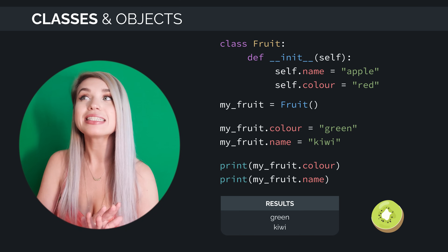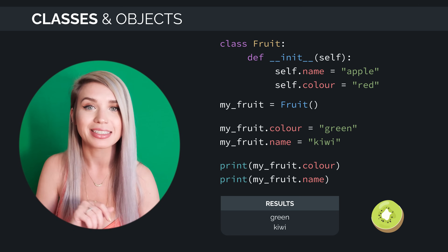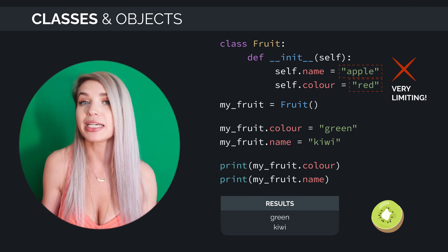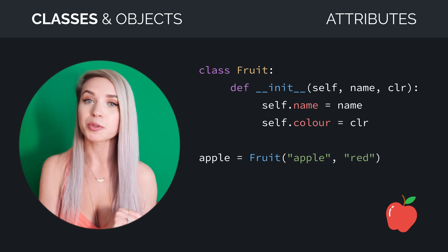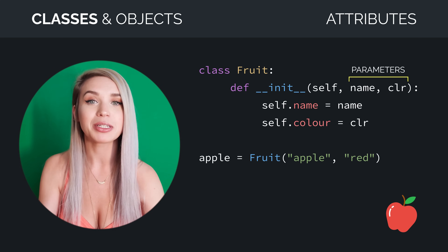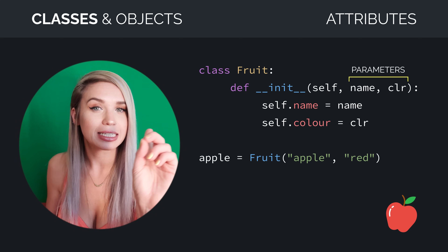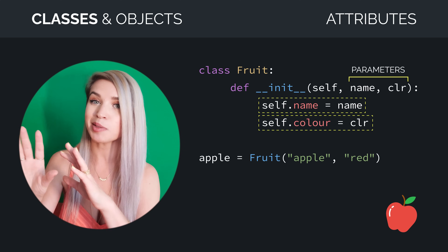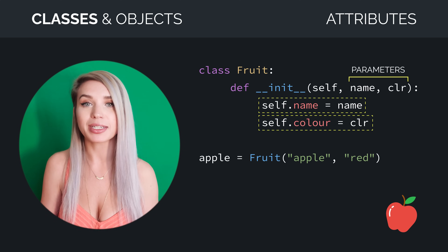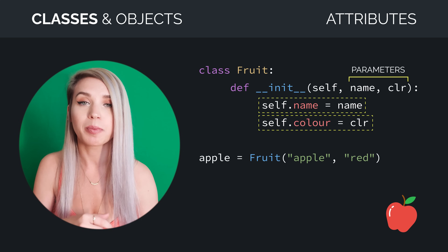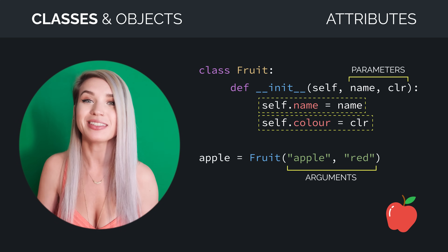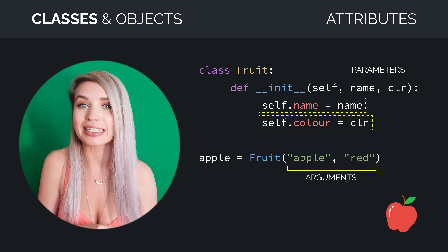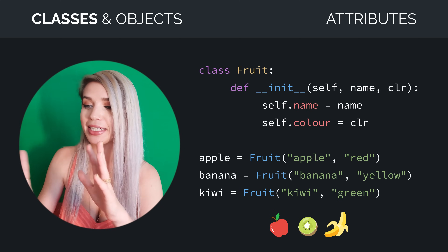This example doesn't quite reflect the full purpose of classes. Since we have hard-coded apple and red, we are very limited whenever we'd like to create a different kind of fruit object. A better approach would be collecting these attribute values as parameters inside our init function. We have assigned parameters to our attributes, and that way each time we create a new instance of the class fruit, we get to pass different kinds of arguments to it, which will create a different kind of fruit object. That way we can easily create bananas and kiwis and so on.